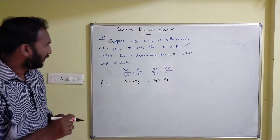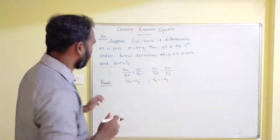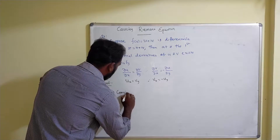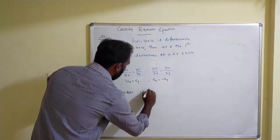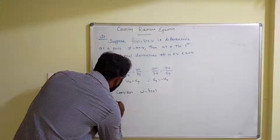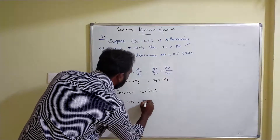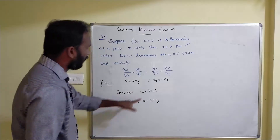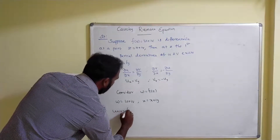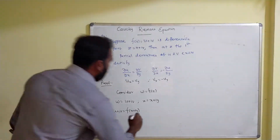This is what we need to prove. Before that, let's recall the definition of the complex variable function. Consider w = f(z); we know w is the function of u and v, that is w = u + iv, and z = x + iy. Substituting, we get u + iv = f(x + iy). Take this as equation number 1.